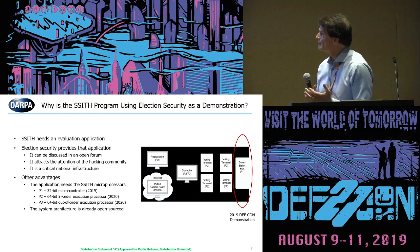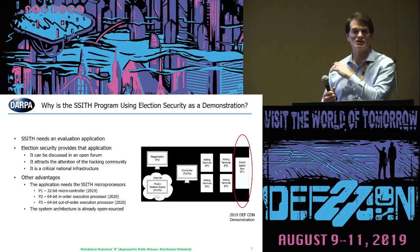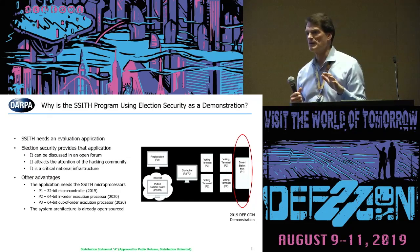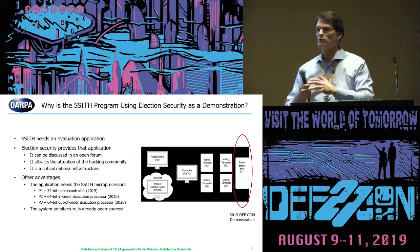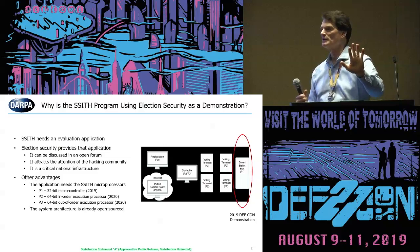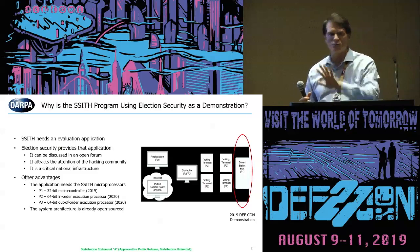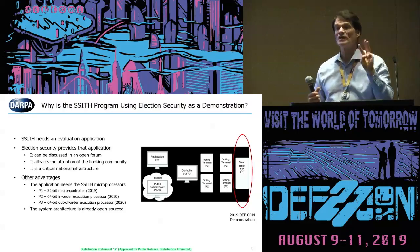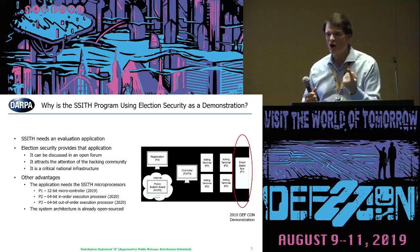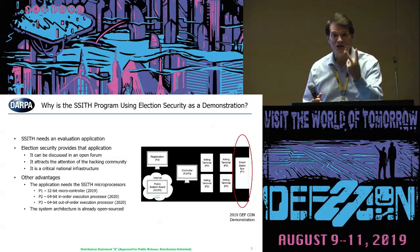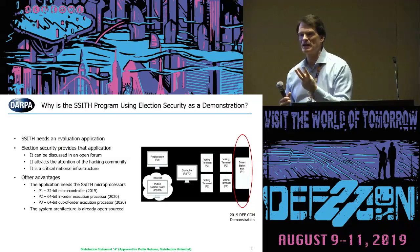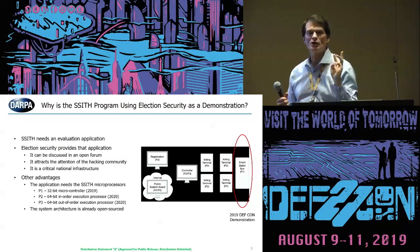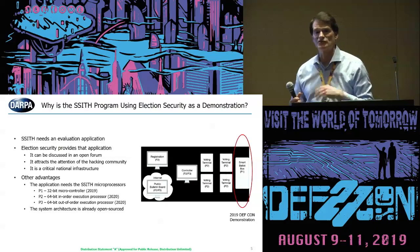If you look at this particular architecture — we did not generate it, it's an open-domain architecture called StarVote, motivated by a municipality in Texas — we're just implementing it. We're not trying to replicate, expand, or improve it. The StarVote system includes P1, P2, and P3 processors: an embedded 32-bit microcontroller, a 64-bit in-order execution processor, and an out-of-order speculative superscalar high-performance processor. The system architecture is already open source, so we don't have to develop it, and it's already available to all of you.